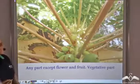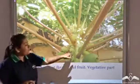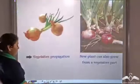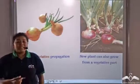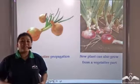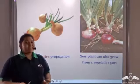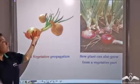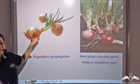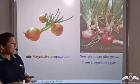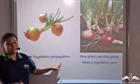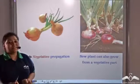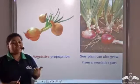Now any part except the flower and the fruit of a plant is known as the vegetative part. New plants need not just develop from seeds — new plants can also develop from a vegetative part. Like in the case of an onion, a new plant is growing from a stem. So this mode of reproduction is known as vegetative propagation, because reproduction is taking place through the vegetative parts of a plant — that is, parts except the fruit and the flower.